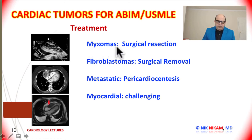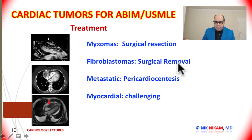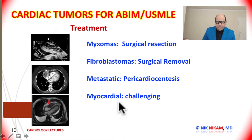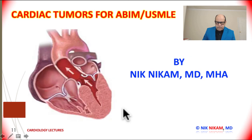Treatment of myxomas is generally surgical resection, which can be easily accomplished in major cardiovascular centers. For fibroelastomas, if they are interfering with the valve functions, they need to be surgically removed. For metastatic tumors, if they produce large pericardial effusion or any evidence of tamponade, then pericardiocentesis may be required to remove the fluid from the pericardial space. If the tumors involve the myocardium itself, such as lipoma or other tumors, they can become challenging. But since the majority of them are not posing any hemodynamic challenges and occur so rarely, we really don't need to be overly worried about them.